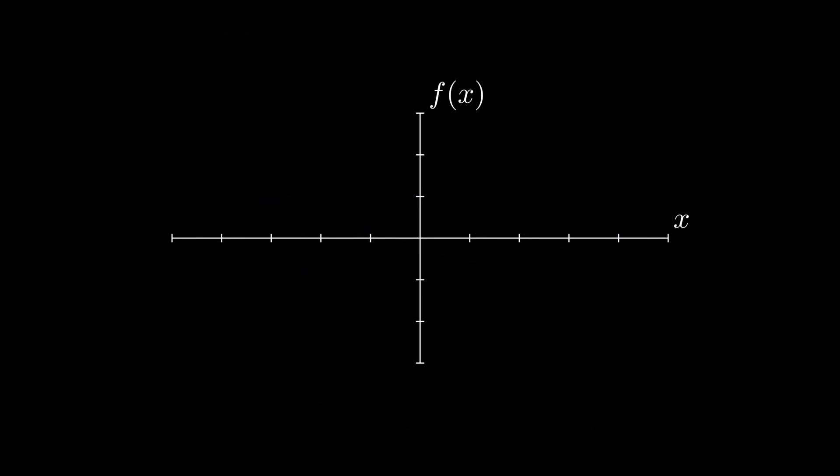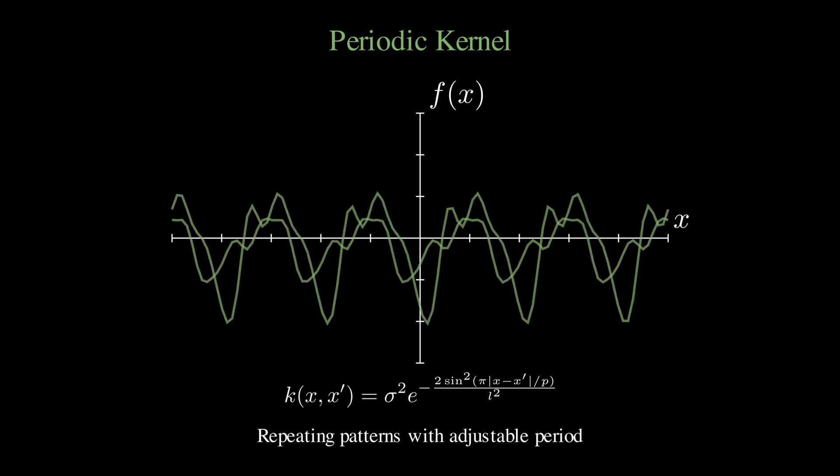Now let's look at the periodic kernel. This one produces interesting cyclical patterns where all functions repeat with the same frequency. They are perfect for capturing seasonal effects or any data with regular oscillations. The formula is k(x, x') = σ² × e^(-2sin²(π|x - x'|/p) / l²). You will want this kernel whenever your data shows cyclical behavior.